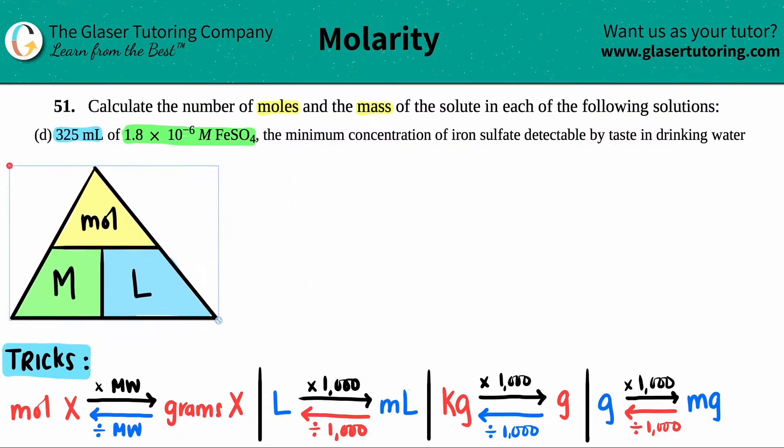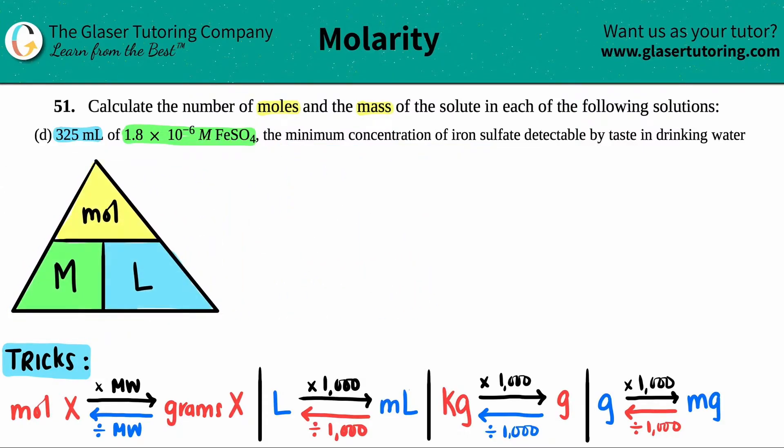When you write this down, yours doesn't have to be as pretty or colorful, but the idea has to get across. You need to draw a triangle, and there needs to be a T in the middle, and then you have your three units. For this triangle to work, the units have to be in the locations that they are here. Remember molarity here, moles up top, and then liters on the bottom.